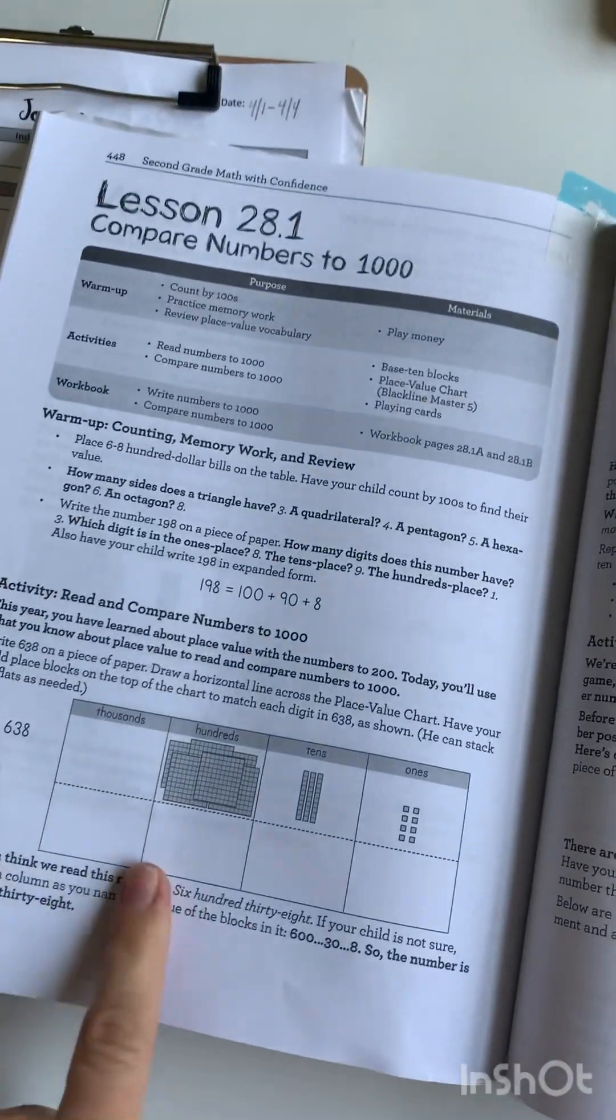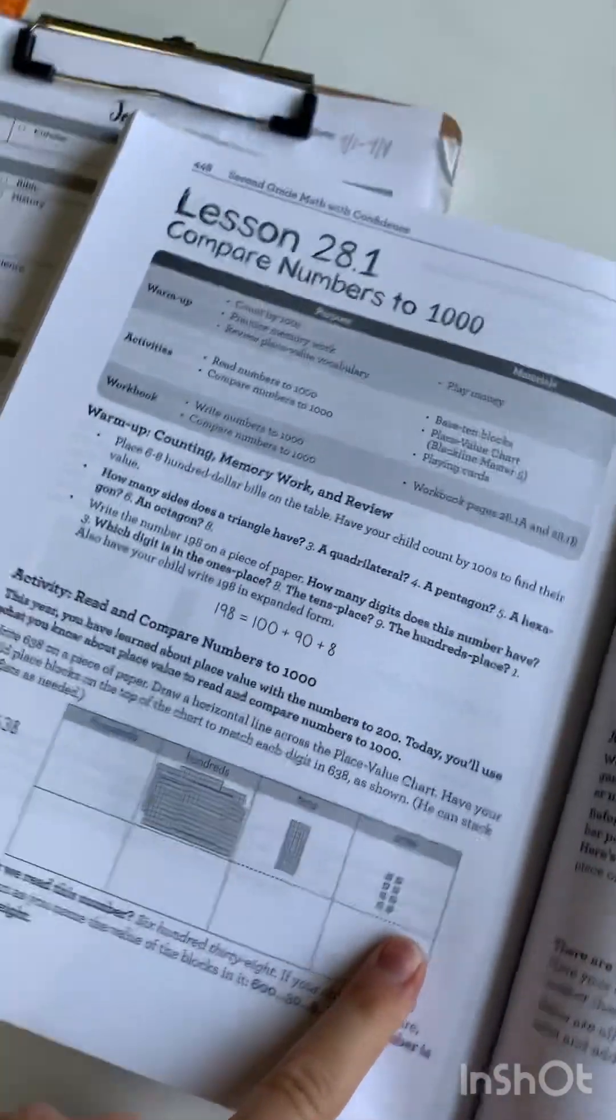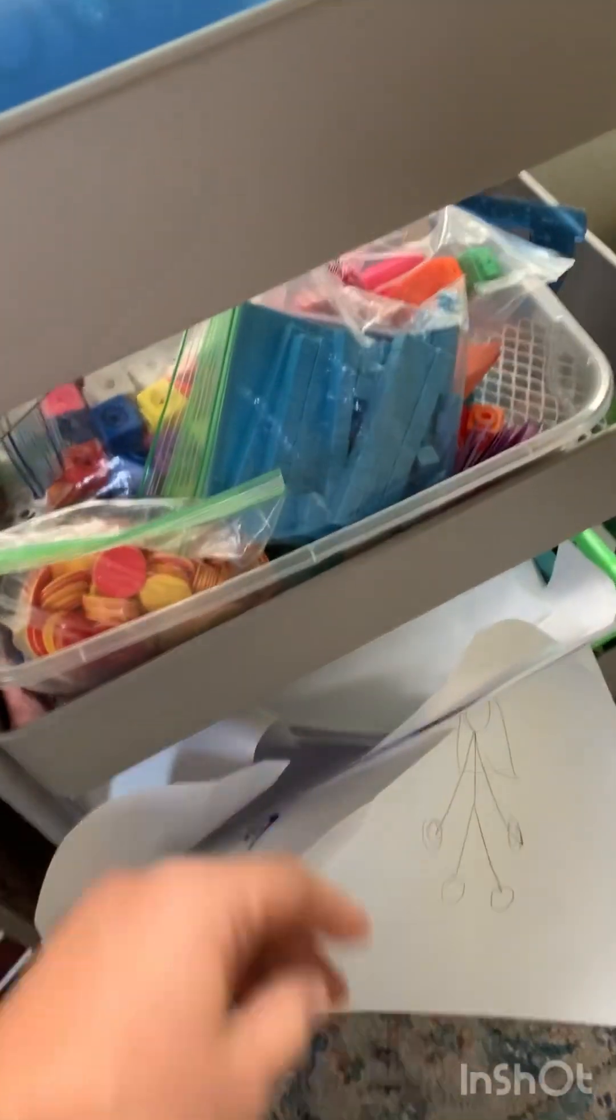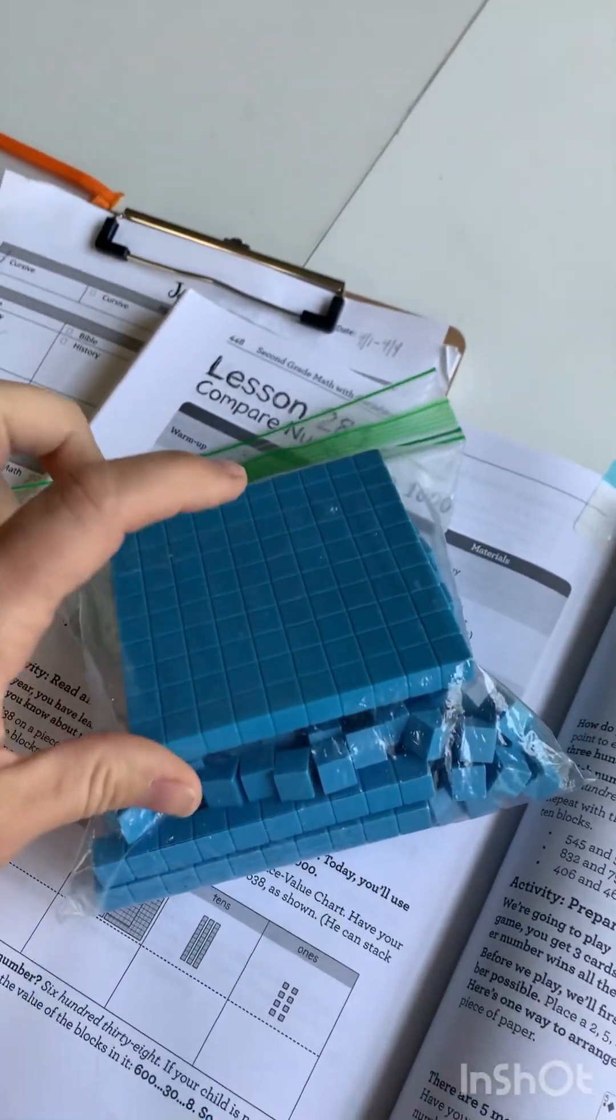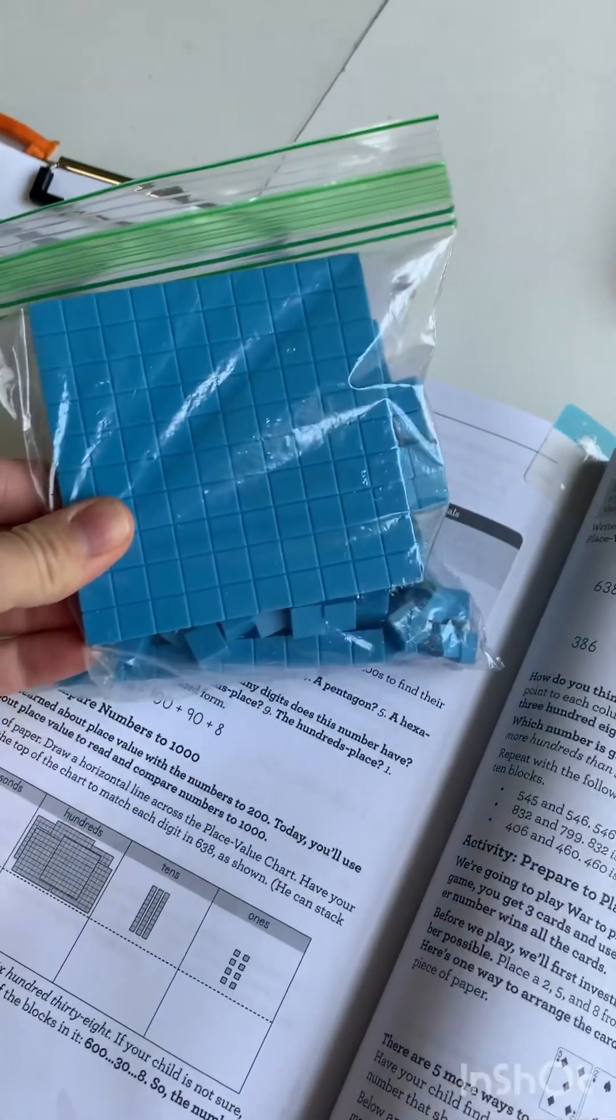Right away, I can see that I need base 10 blocks. Now, I have all my math supplies. Oh, don't judge the messy cart right here. The unfortunate thing is I have the smaller pack. I only have one of these 100 blocks.